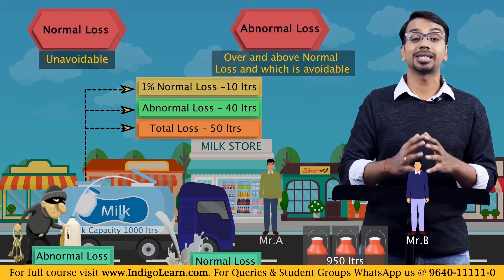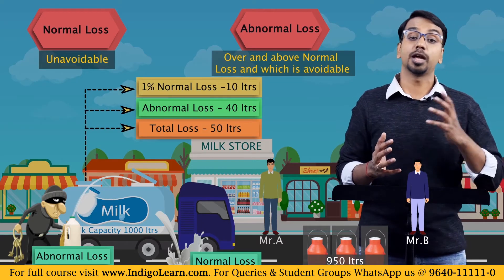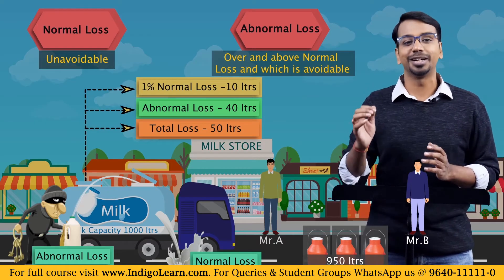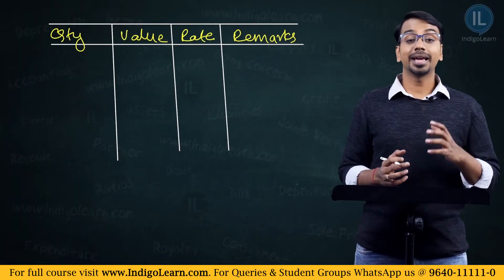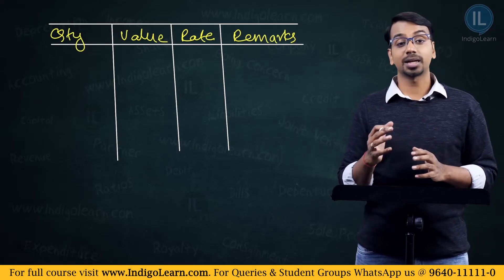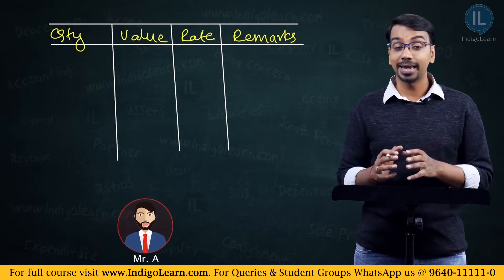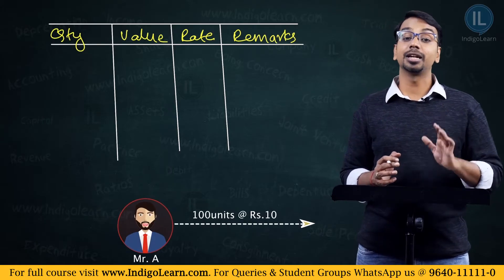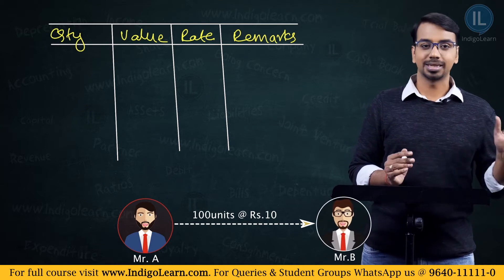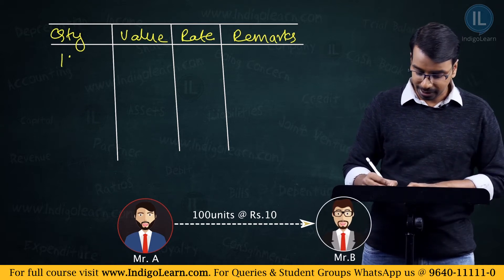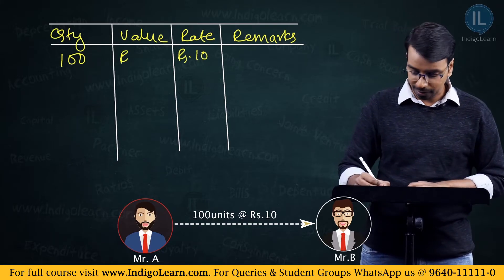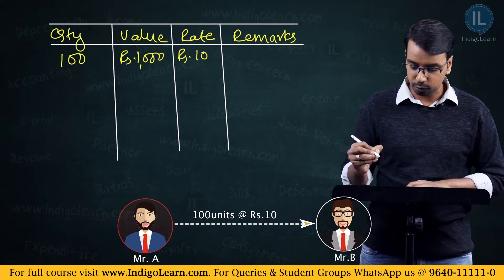It is very important to understand normal loss versus abnormal loss because the accounting treatment of these two losses will be different. Let us understand using an example. There is one consignor Mr. A who has sent 100 units at a cost of rupees 10 per unit to Mr. B the consignee. So 100 units were sent, the rate is rupees 10 per unit, and total value of goods sent is rupees 1000.